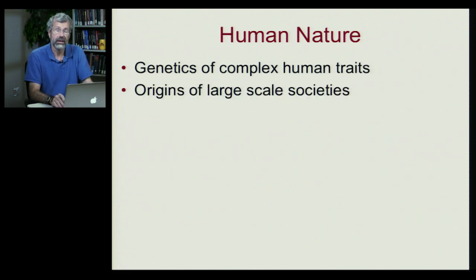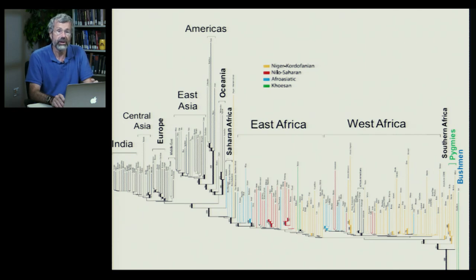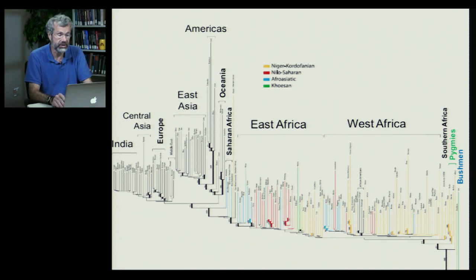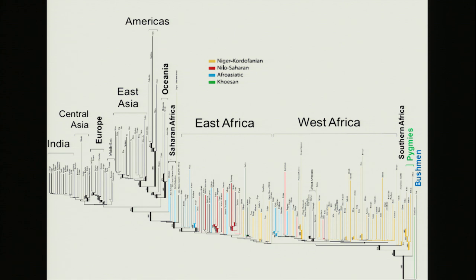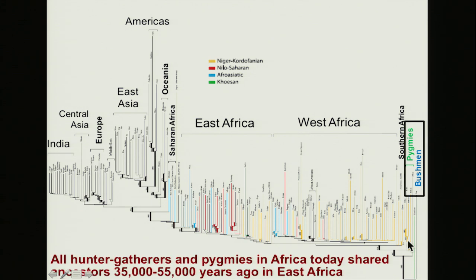We want to do this in contemplating the origins of the large-scale societies that now dominate the Earth. Historically, we can reconstruct something about our ancestry by looking at the genetics of all human groupings. These connect through the DNA similarities of people from India, Asia, East Africa, West Africa, etc. And we see common ancestry that takes us back to Africa — closest to the common ancestor of all humans, found particularly in the Pygmies and the Bushmen.